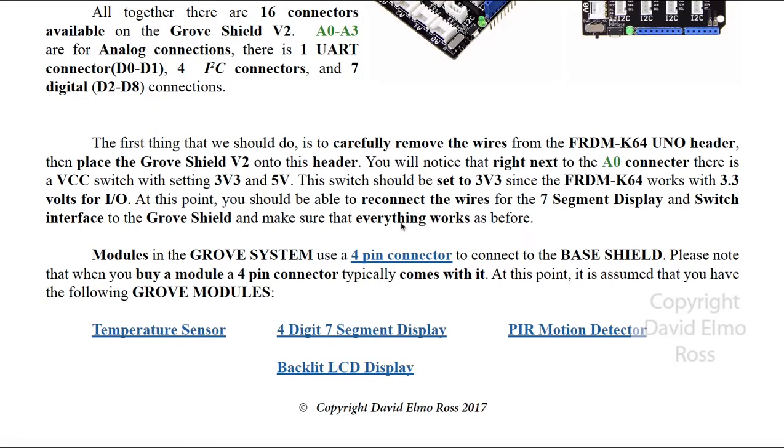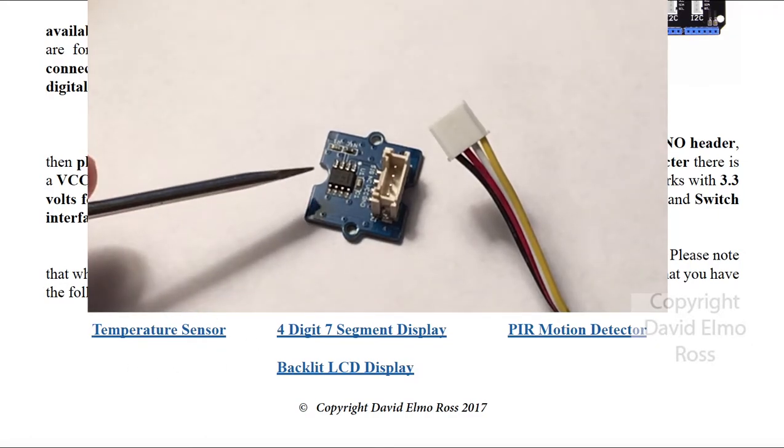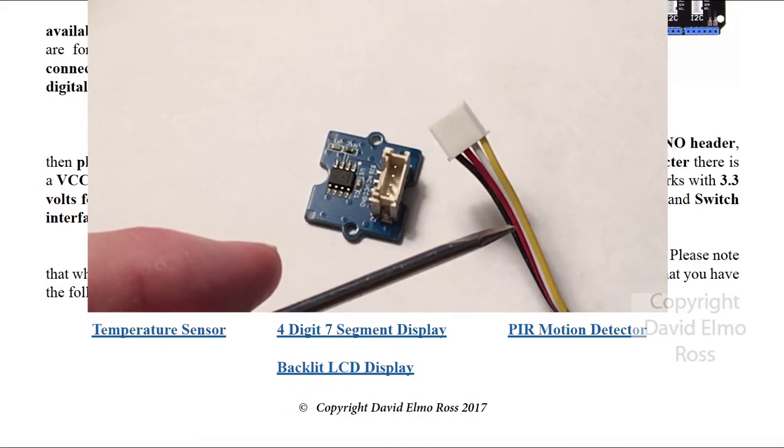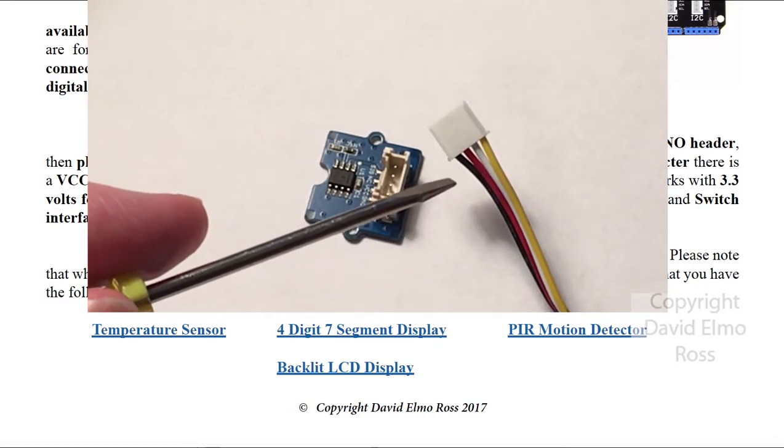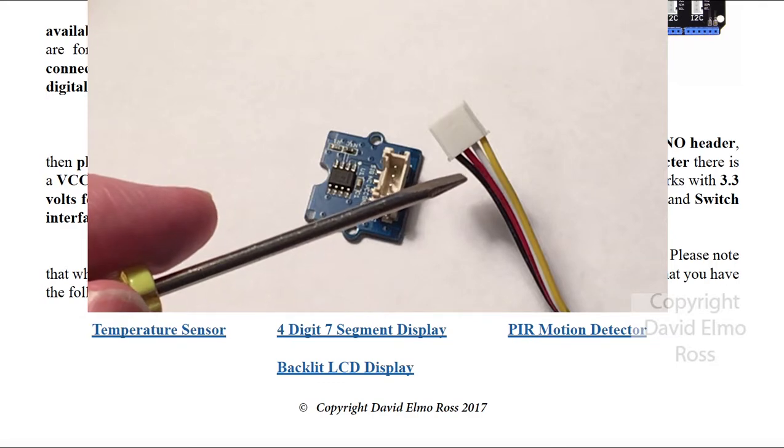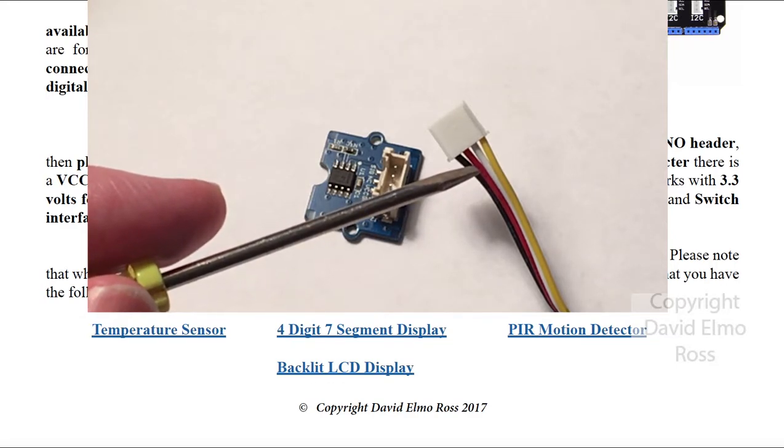Now the first thing that we're going to connect to our Grove shield is our temperature sensor. Our temperature sensor requires us to hook it to a four-pin wire. Notice these four wires are black, which is ground, red, which is 3.3 volts, white, and yellow. White and yellow carry the data.